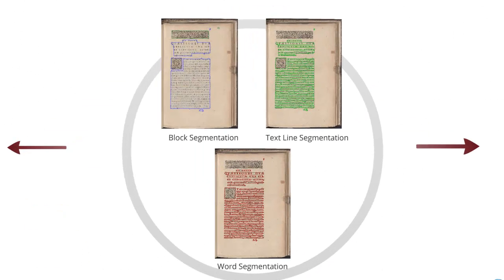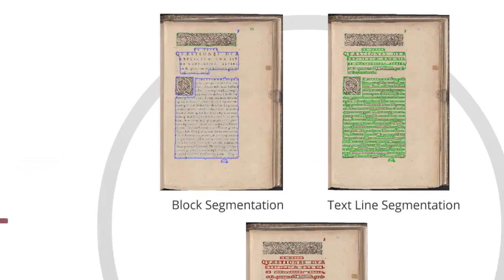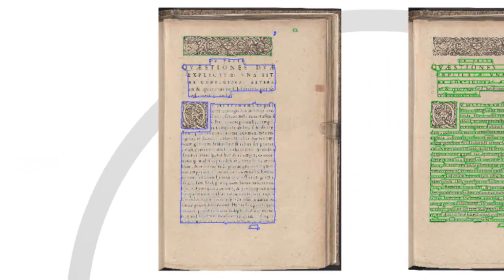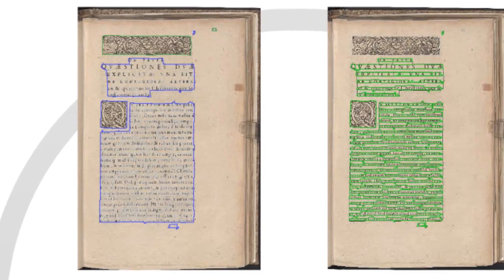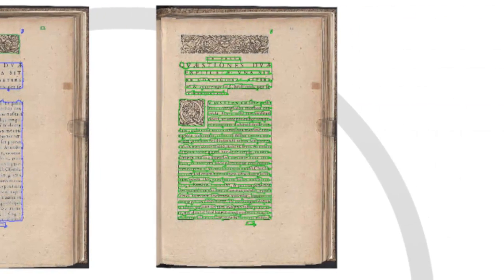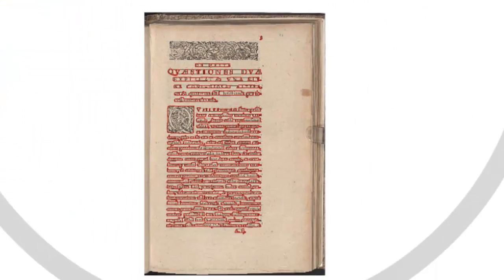IMPACT introduces novel segmentation models that allow the problems of text block, text line, word, and character segmentation to be addressed separately, while at the same time allowing interplay between all levels. Here are examples of the segmentation of one page on three different levels: block segmentation in blue color, line segmentation in green color, and word segmentation in red color.